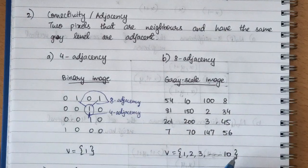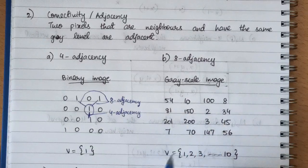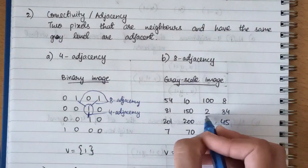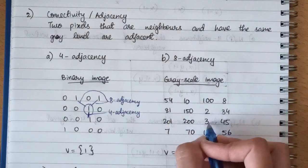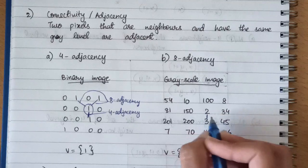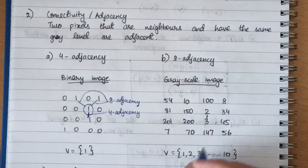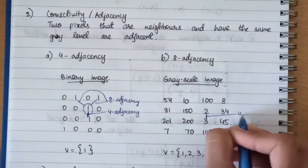Similarly, if we take a grayscale image with the set V = {1, 2, 3, ..., 10}, connections can be made only with elements in that set. For four adjacency, we can connect these two elements because both are in the set — this is called four adjacency.